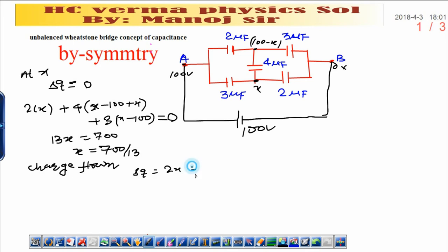2 times x plus 3 times 100 minus x. When you substitute the value of x in this equation we will get delta q.